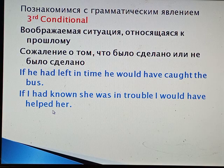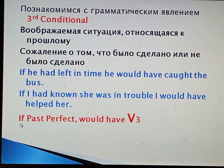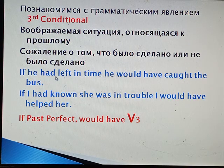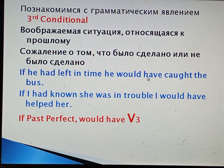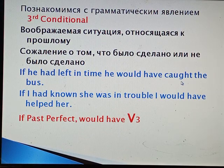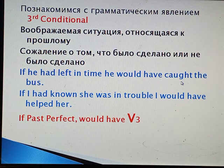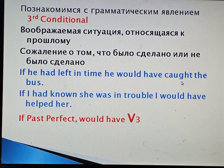Обратите внимание на употребление времён. В придаточном предложении с if мы работаем в past perfect: had left, had known. А в главном мы строим предложение: would + have + третья форма глагола. Запишите себе правила в тетрадь: употребление, примеры предложений и схема употребления времён. Обязательно запишите это в тетрадь.